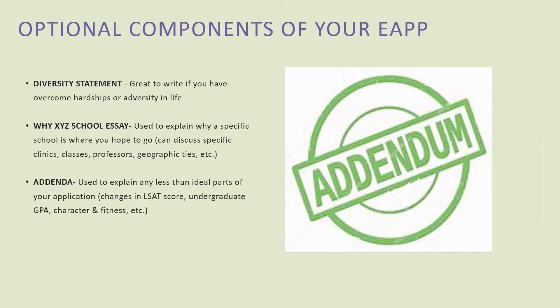For example, if you did poorly your first two years of undergrad because you had to work two jobs, or because you're a first-generation student and you simply didn't know how to study properly, you should tell the school that — because there is no way they're going to know that unless you simply tell them.